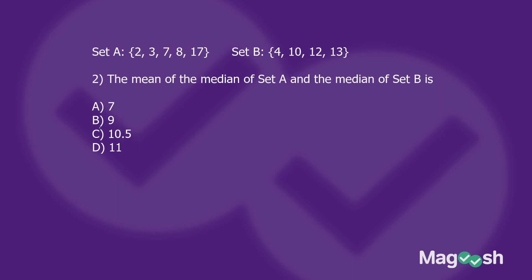The mean of the median of Set A and the median of Set B — what is it? For Set A, I look for the median, the middle number, which is 7. For Set B, I find the median: the two middle numbers are 10 and 12, so I average them: 10 plus 12 is 22, divided by 2 is 11. Now I find the mean of 7 and 11: 7 plus 11 is 18, divided by 2 is 9, giving us answer choice B.